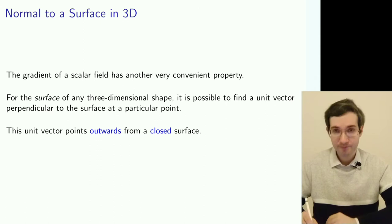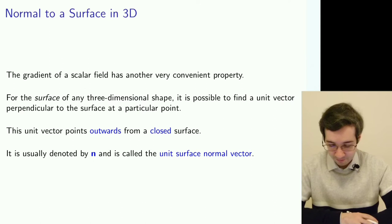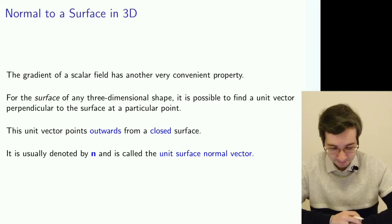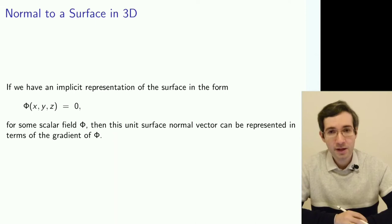We generally take a unit normal pointing outwards from closed surfaces. So that is the normal vector, the vector which points outwards of the surface. But how to actually find that for any given surface?